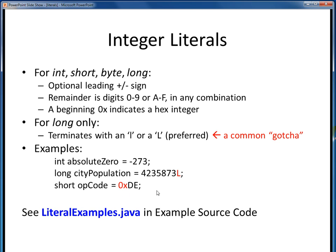Just as a review, each of these instructions is one Java statement with a required semicolon terminator. Also, each of these statements represents a variable declaration and initialization together, because we are specifying the variable name, its data type, and its value assignment all together in one statement. Again, all hard-coded values such as these in a program are literals. We'll look at these examples in code in a few moments.